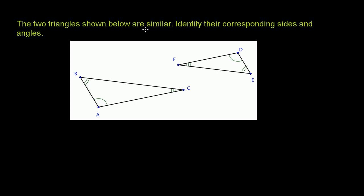The two triangles shown below are similar. Identify their corresponding sides and angles. So we see here, based on how it's marked, that this angle is equal to that angle. This angle with two arcs here is equal to this angle with two arcs here. And this angle over here with three arcs is equal to this angle with three arcs over there.